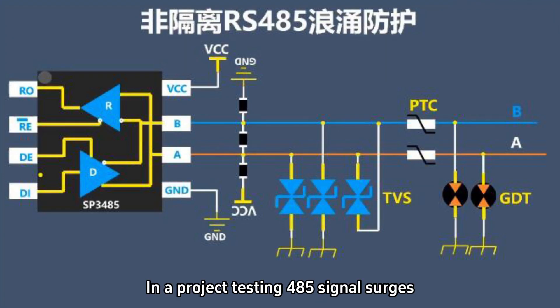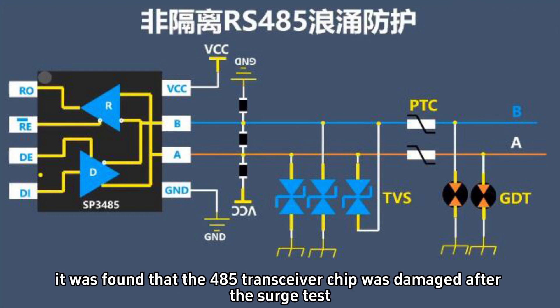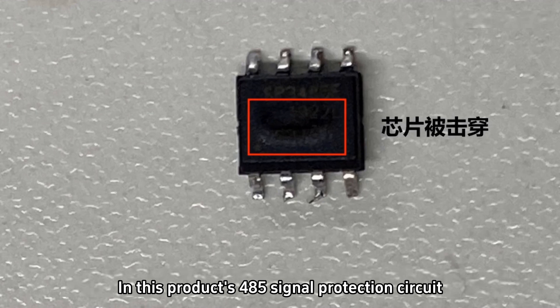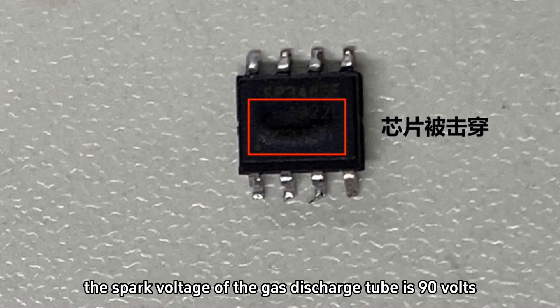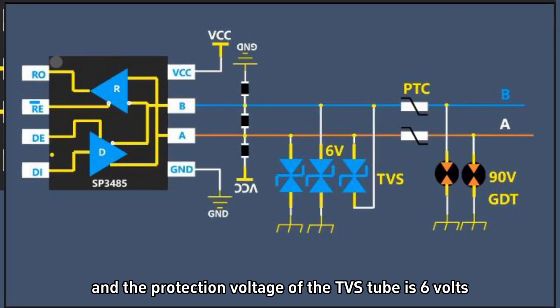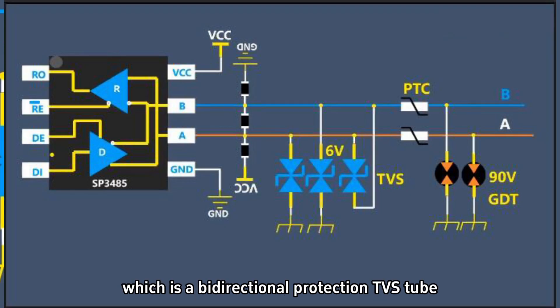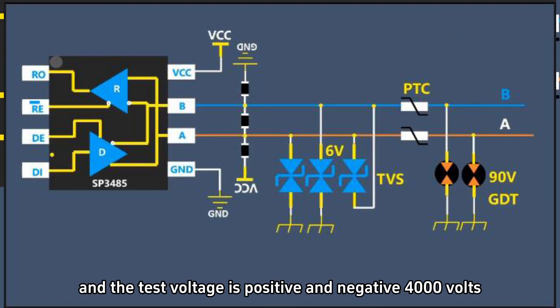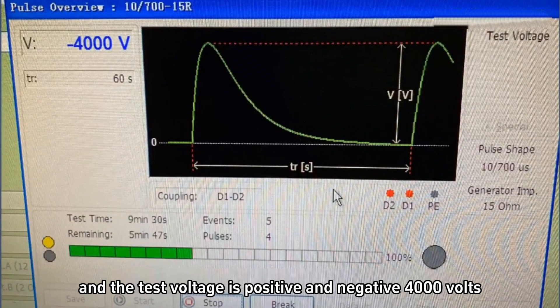In a project testing 485 signal surges, it was found that the 485 transceiver chip was damaged after the surge test. In this product's 485 signal protection circuit, the spark voltage of the gas discharge tube is 90 volts, and the protection voltage of the TVS tube is 6 volts, which is a bi-directional protection TVS tube. The surge test uses a 10-700 waveform, and the test voltage is positive and negative 4000 volts.